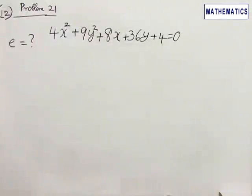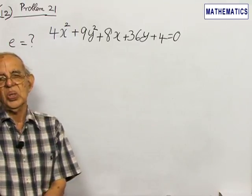Question 12 refers to problem 21. You are asked to find the eccentricity of the ellipse 4x² + 9y² + 8x + 36y + 4 = 0.